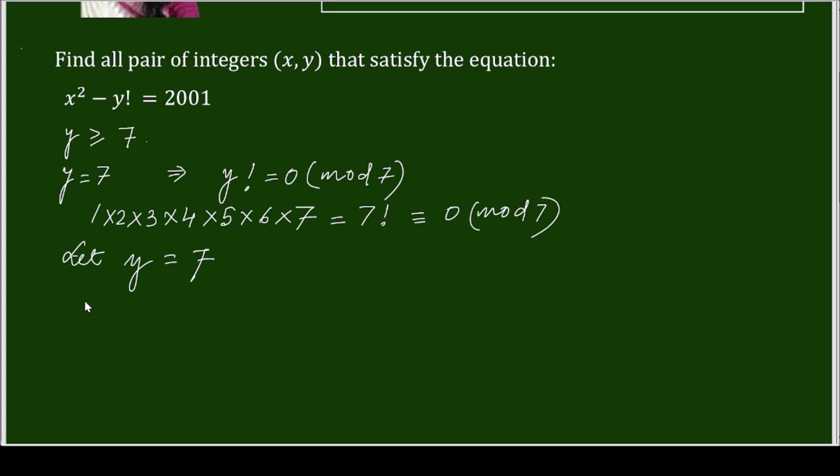Let us see what is 2001. 2001 is congruent to, if we divide 2001 with 7, you are getting 7, 2 times 14, 6, 0, 7, 8, 56, 4, 1, 7. Then either I will take 7, 5, 35, remainder will be 6, but I will not write the remainder 6. Let it write 6 modulo 7 or this is congruent to minus 1 modulo 7.